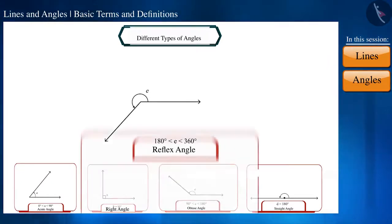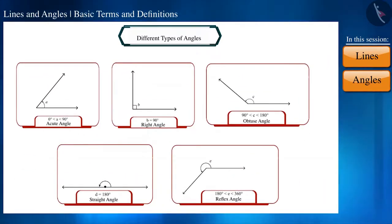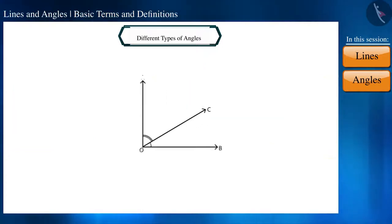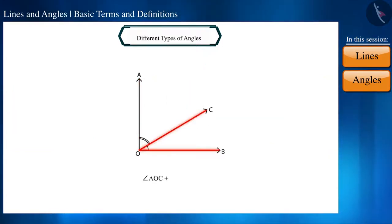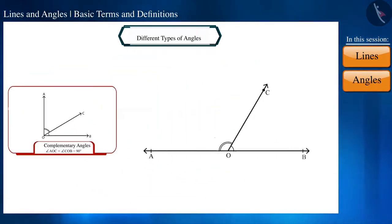Friends, if the sum of any two angles is 90 degrees, we call them complementary angles. And if the sum of any two angles is 180 degrees, we call them supplementary angles.